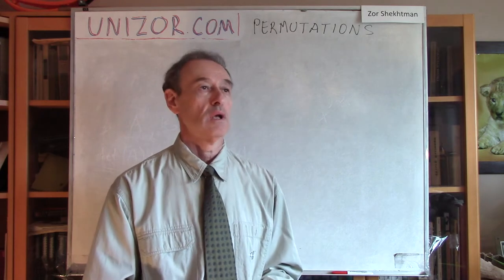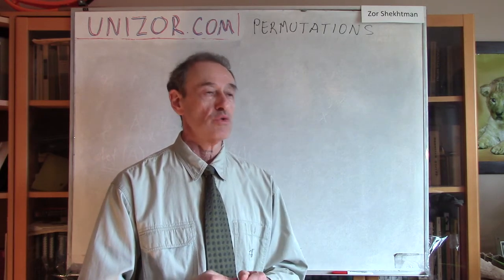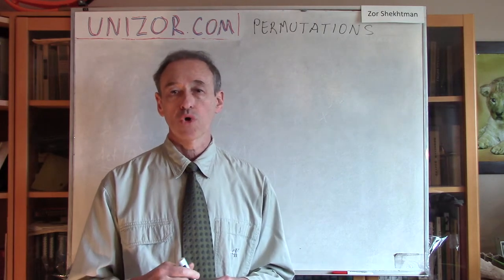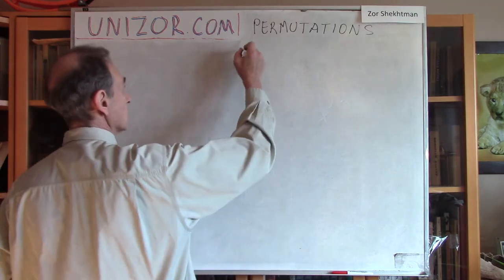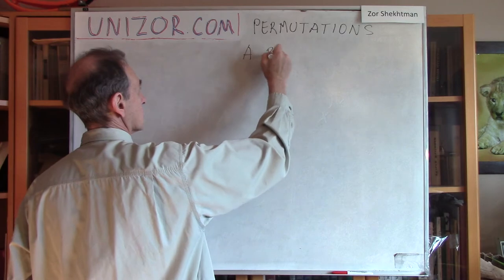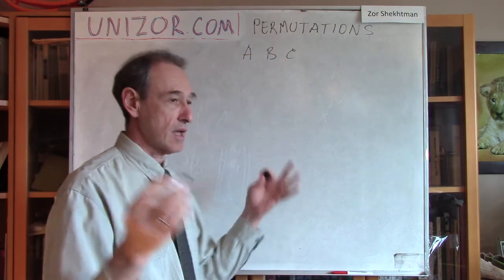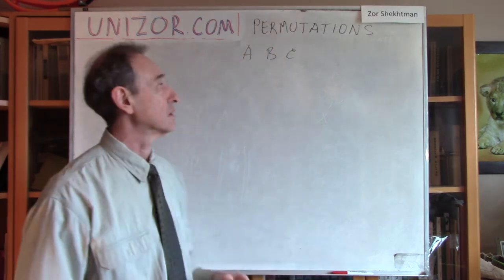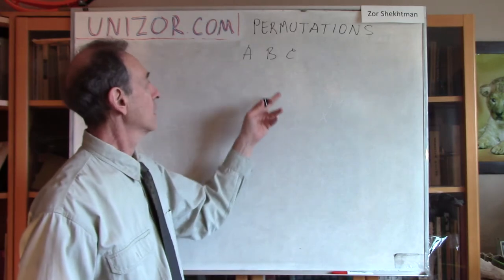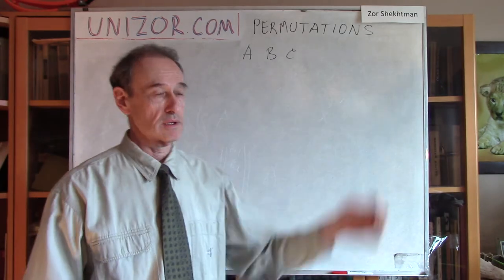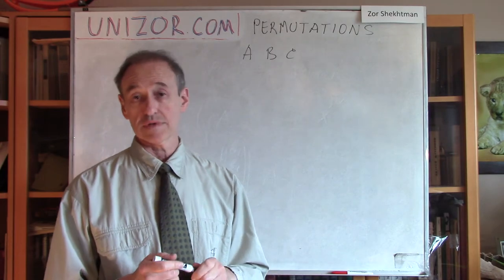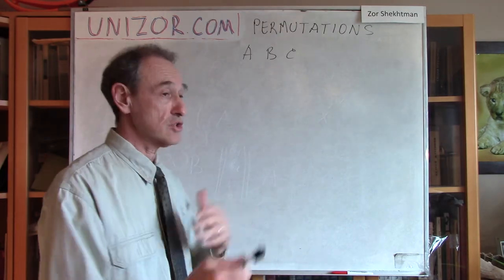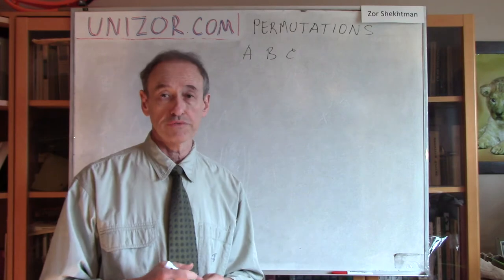For instance, you have to go to three different places. Let's call it A, B, and C. You have to visit them. Let's say it's Mother's Day and you have a grandmother, another grandmother, and the wife to basically congratulate with the Mother's Day. The question is, which order you prefer to do this?